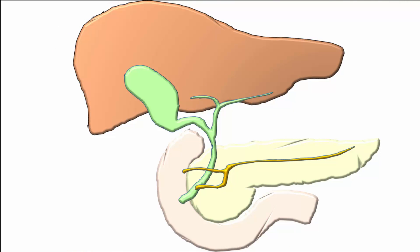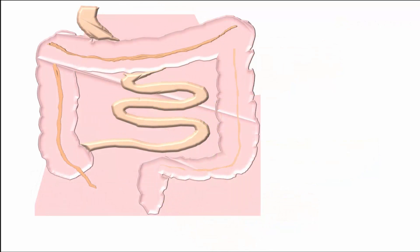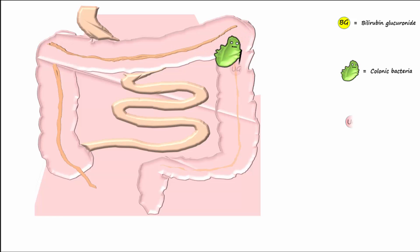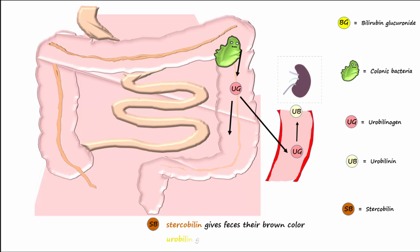Bilirubin glucuronide, abbreviated BG, is the conjugated form of bilirubin and is also called direct bilirubin. From the gallbladder and liver, bilirubin glucuronide is dumped into the small intestine. Conjugated bilirubin is not absorbed from the small intestine, but travels to the colon, where it is deconjugated into urobilinogen by colonic bacteria. Some of the urobilinogen is converted into stercobilin, which gives feces their brown color. Some urobilinogen is also reabsorbed into the blood, oxidized to urobilin, and excreted by the kidneys to give urine its yellow color.